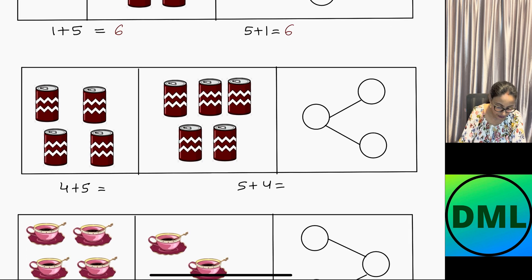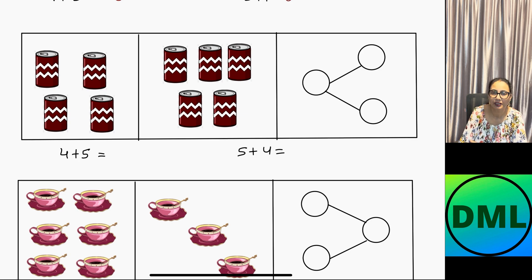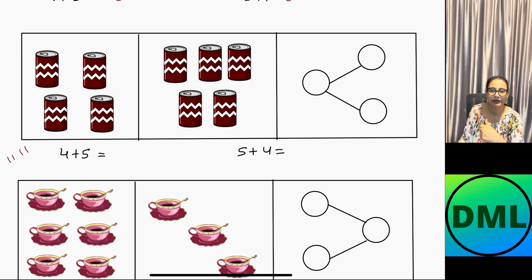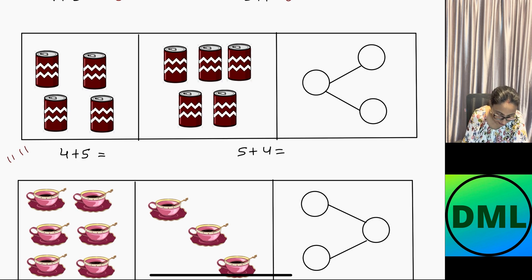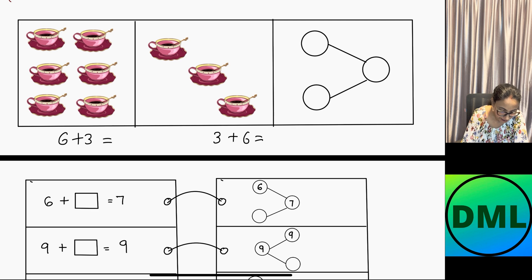Let's see the next combination. There are 4 cans here and 5 cans there, so it will be 4 plus 5. Since 5 plus 4 is the same thing, I add 4 to 5 by counting on: 5, 6, 7, 8, 9. My answer is 9. Both answers are 9, so I'll write down 5 here and 4 here, and the combination gives the answer 9.